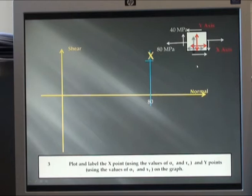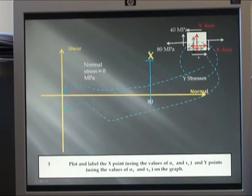Now for my Y stresses, I have no normal stress in the Y axis, so that goes to zero on this axis. My shear will be negative 40 at this point, and I label that Y.